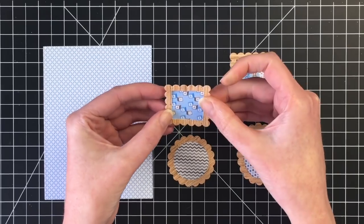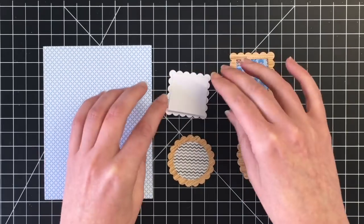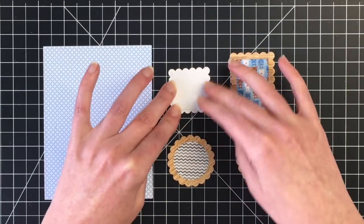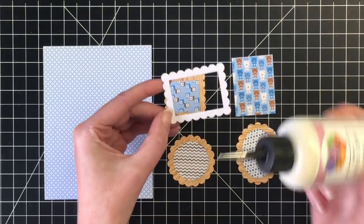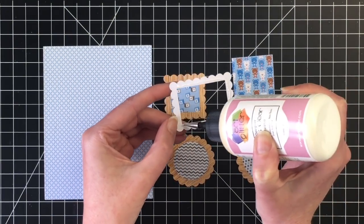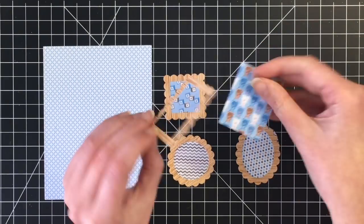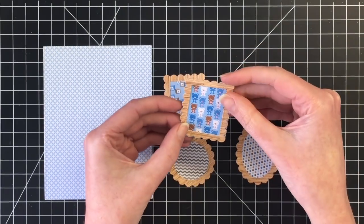These picture frame dies from Lawn Fawn cut out the inside and the frame. So I just kept the inside pieces so I could reuse them on another project.